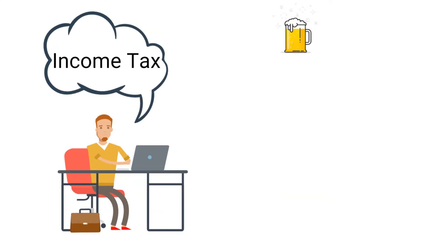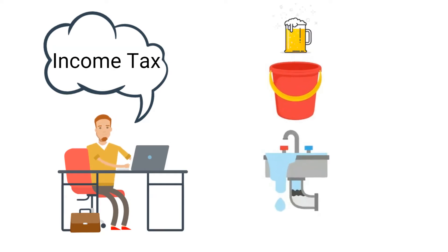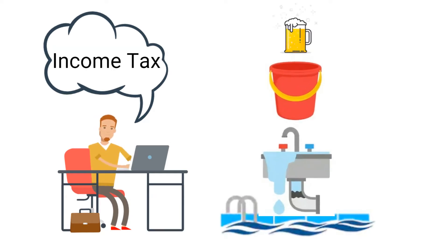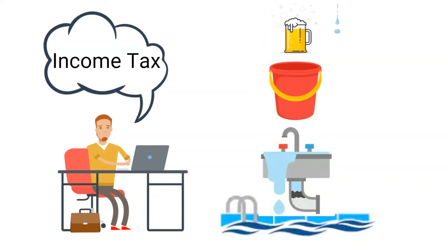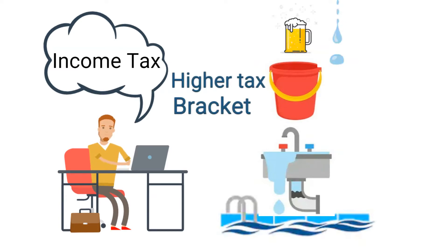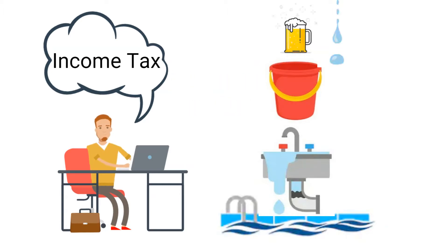Picture it as filling up a glass within a bucket, within a sink, within a pool, and so on. Money is represented by water, and the first glass represents the lowest tax rate. When you have more water than the glass can hold, it will overflow into the bucket. The bucket represents the higher tax rate. When it flows into the bucket, it doesn't matter whether the bucket is one quarter full or almost full — you will be taxed at the applicable rate. This then continues until the water starts filling up the pool.